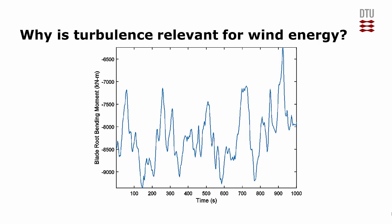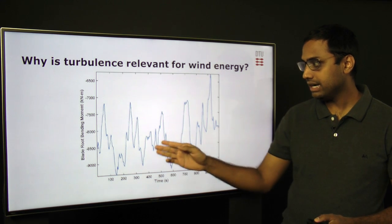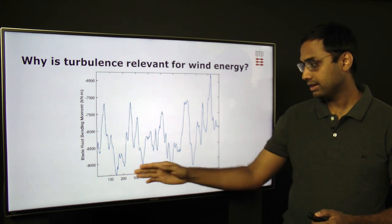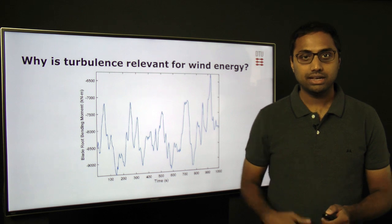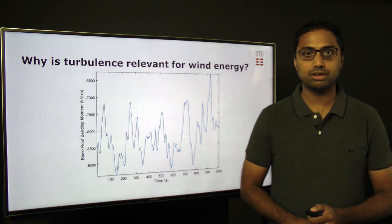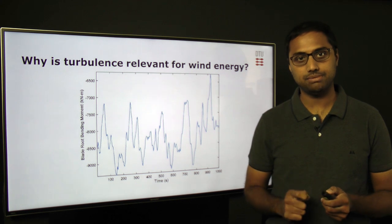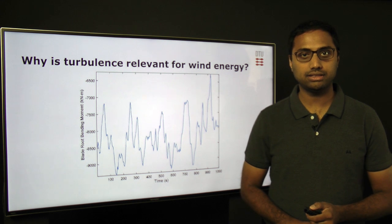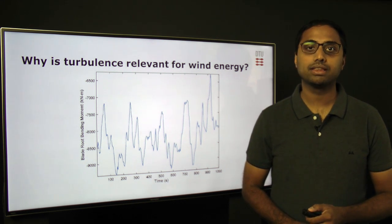This causes fluctuations in the loads that the wind turbine experiences, as shown in this slide. On the x-axis you have time in seconds going from 0 to 1000 seconds; on the y-axis you have the blade root bending moment in kilonewton meters. It is clear that there is random variation of the blade root bending moment as time changes. Ultimately, this causes fatigue damage, which you will learn about in the lecture dealing with structural dynamics.